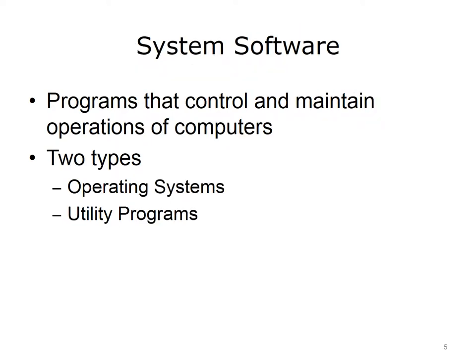This lecture defines what an operating system, or OS, is and explains the features and functions of various operating systems. System software consists of programs that control and maintain the operations of a computer. There are two types of system software: operating systems and utility programs.